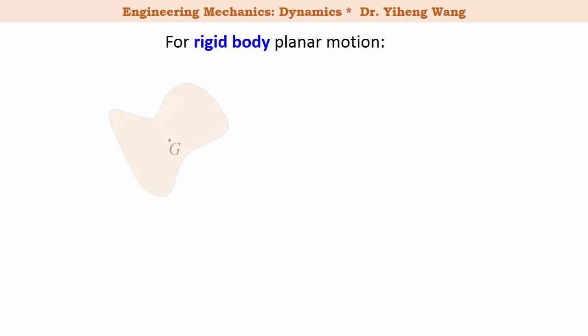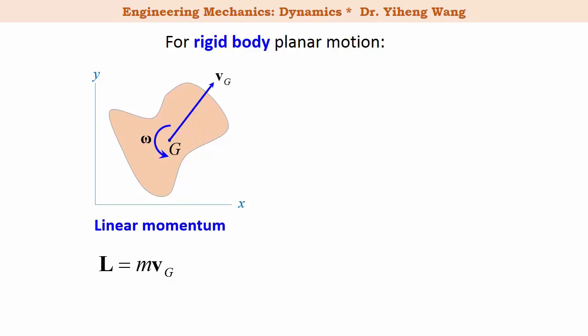Now let's look at how the linear momentum and angular momentum are defined for a rigid body undergoing planar motion. Its gravitational center point G has linear velocity vg, and the rigid body has angular velocity omega. Its linear momentum is simply defined as the mass multiplied by the linear velocity vg of its gravitational center. If we set the rigid body into the x-y coordinate system, then the linear velocity vg can be resolved into x and y components, therefore the linear momentum vector L can also be resolved into two scalars: the linear momentum along the x direction and the linear momentum along the y direction.